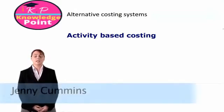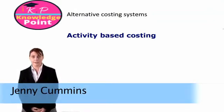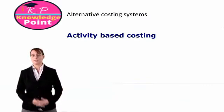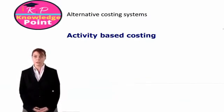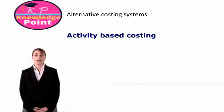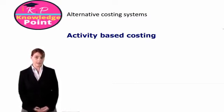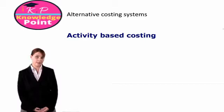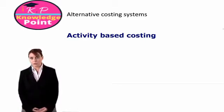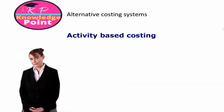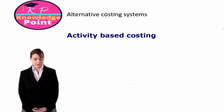In this next session, we are looking at a number of alternative costing systems. These are more modern costing systems compared to our more traditional absorption costing or job costing systems. For F2 purposes, we don't actually have to do any calculations in this area — you just need to understand the theory of what's involved in each of these costing systems. While I will use some easy numbers to illustrate how we apply each costing system, for exam purposes, you just need to know the theory.